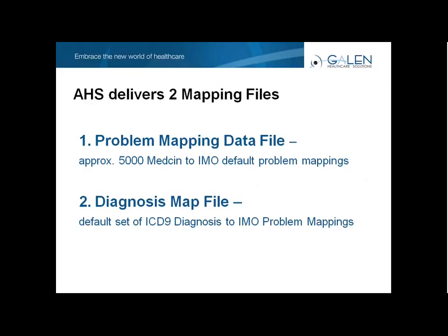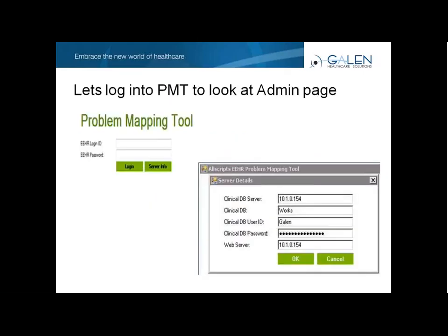Allscripts will deliver two mapping files. One is the problem mapping data file, which contains approximately 5,000 medicine to IMO default problem mappings. The other is the diagnosis map file, which is the default set of ICD-9 to IMO problem mappings. The clinical content team at Allscripts went in and looked at the client base to determine the mappings needed for the highest frequency of use, mapping medicine to IMO where there was an exact match. There are going to be some that fall out of that exact match, which is where the manual mapping work comes in.